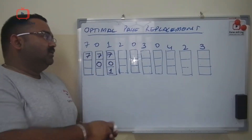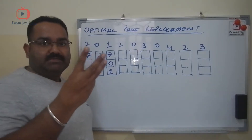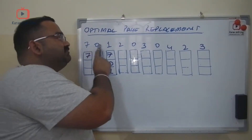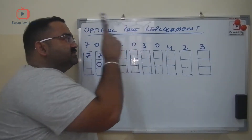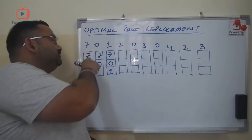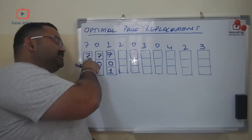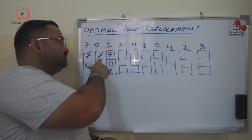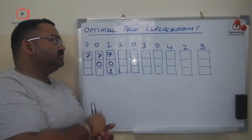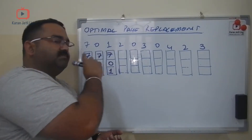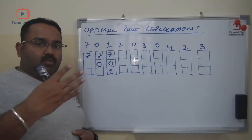I have a cache with three spaces, and this is my page reference string. I need 7 — cache is empty, I put 7. I need 0 — cache is empty, I put 0. I need 1 — cache is empty, I put 1.